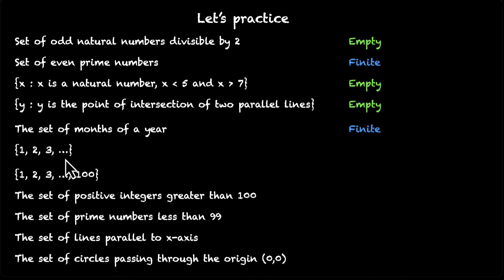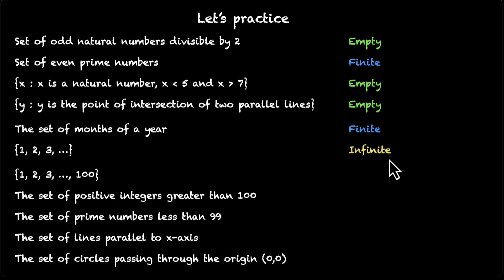1, 2, 3, and so on — "and so on" means by default it's an infinite set.